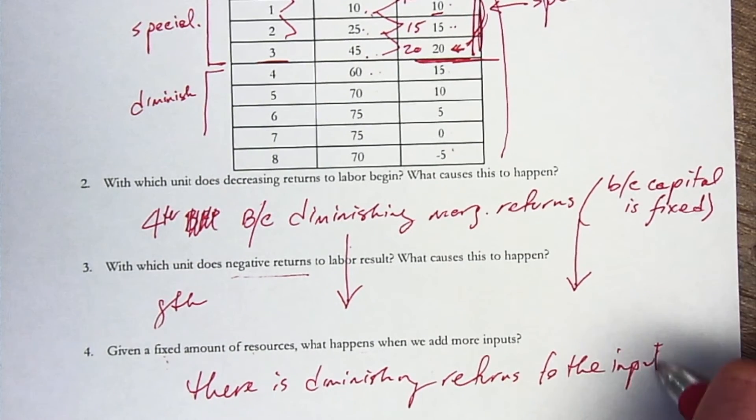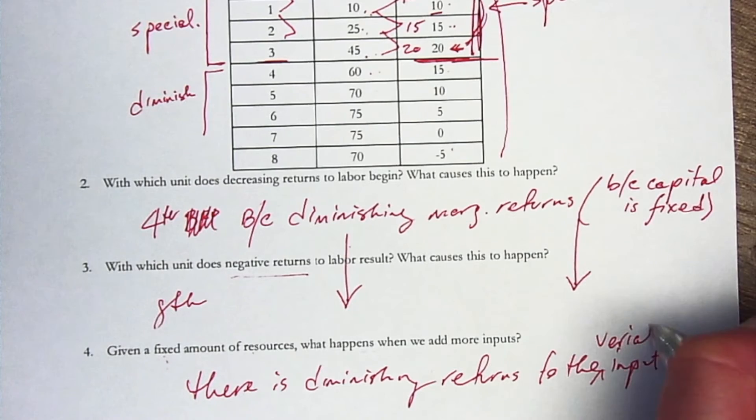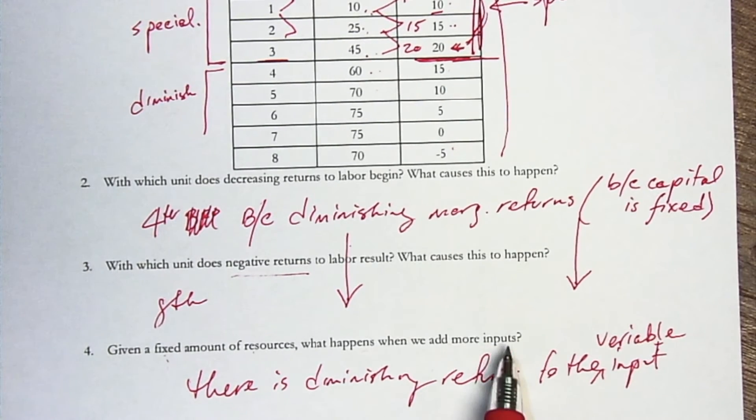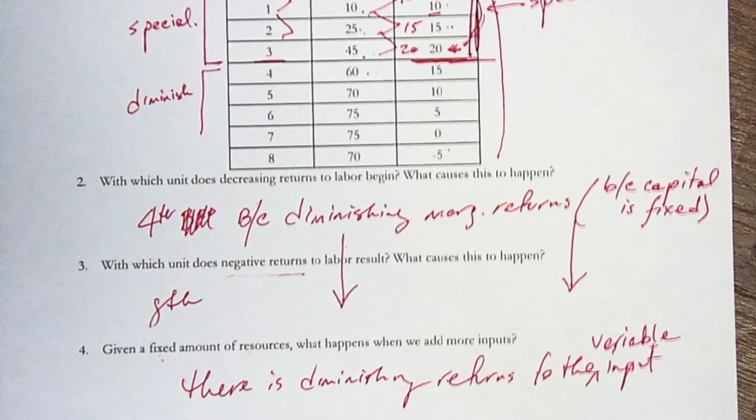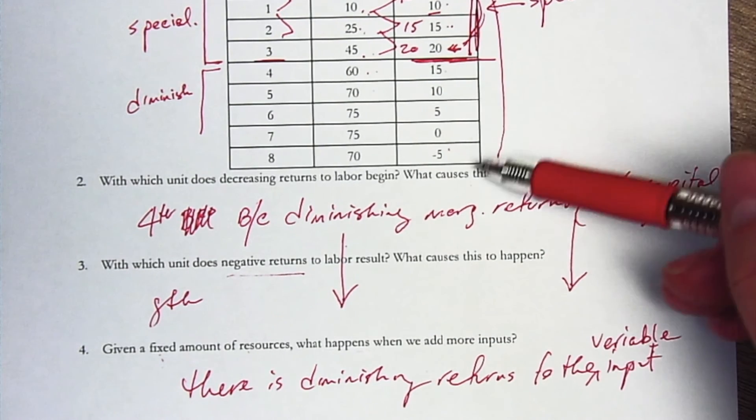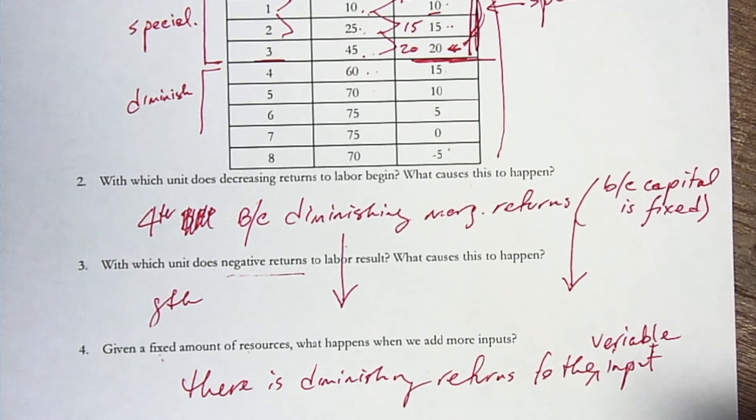To the variable, we could say, variable input. So whatever that variable input is, as we add more of it, there's going to be diminishing returns to it. We're going to get less and less. Eventually, it will happen out of it, such as we call it the law of diminishing marginal returns.